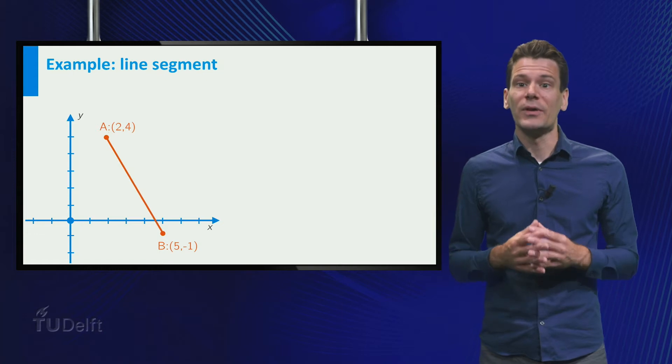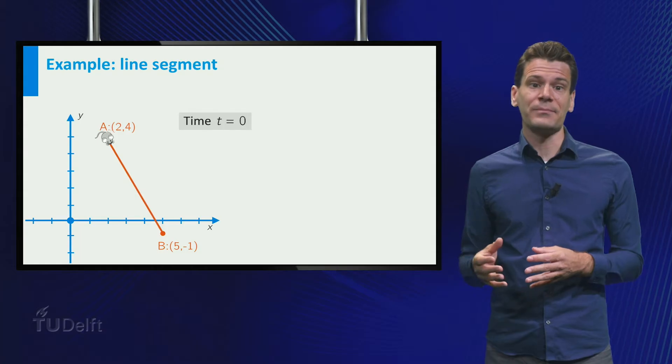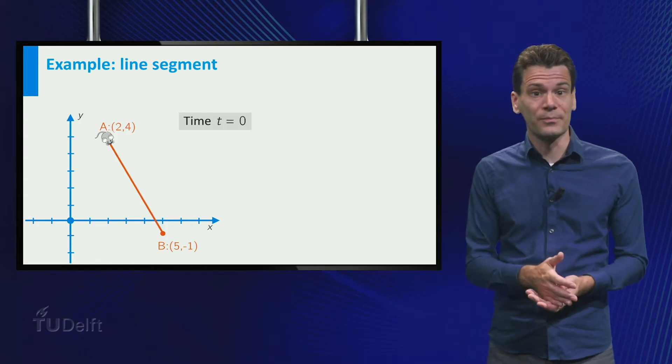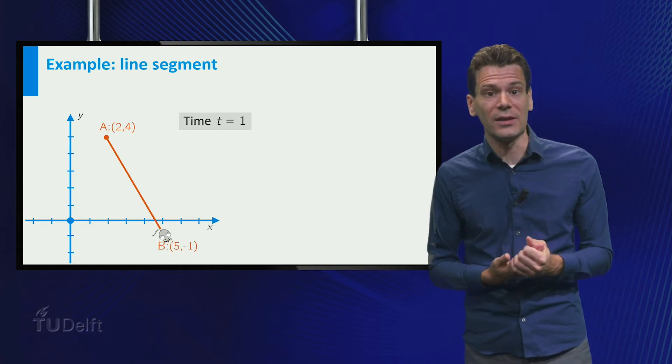As before, we can think of one of our mice running along the line. Suppose that it starts at A at t equal to 0, and then runs at constant speed and ends at B at t equal to 1.